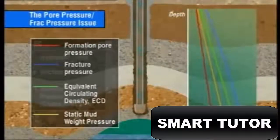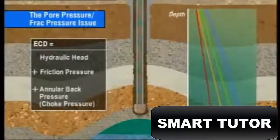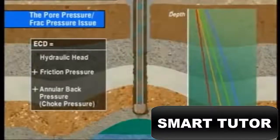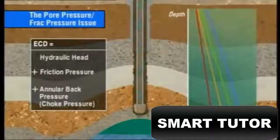The ECD, or bottom hole circulating pressure, is the sum of the hydraulic or static head of the drilling fluid, plus the friction pressure, created by the circulating drilling fluid in the annulus, and any surface choke back pressure.